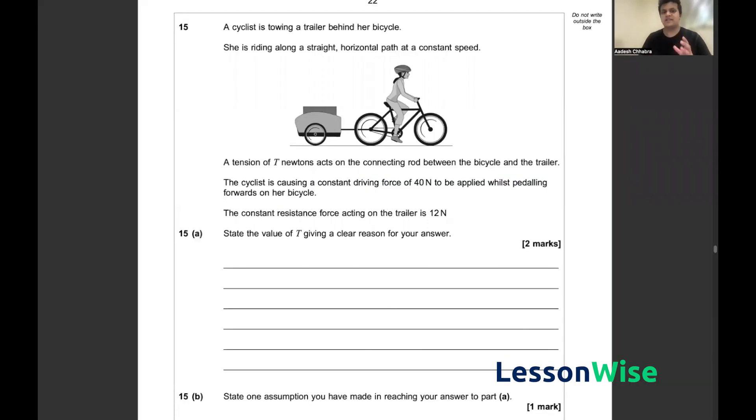In question 15, we've been told that a cyclist is towing a trailer behind her bicycle. She is riding along a straight horizontal path at constant speed—that's a very important aspect. A tension of T newtons acts on the connecting rod between the bicycle and the trailer, and the cyclist is causing a constant driving force of 40 newtons to be applied whilst pedaling.